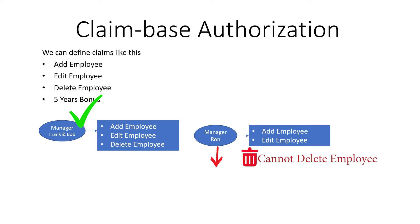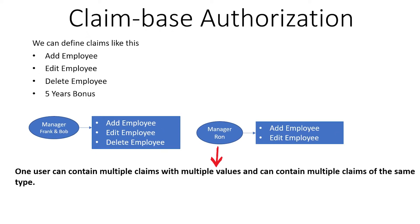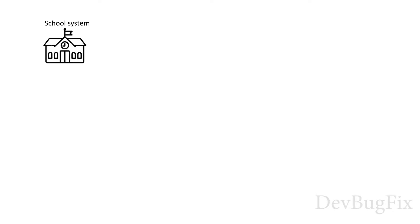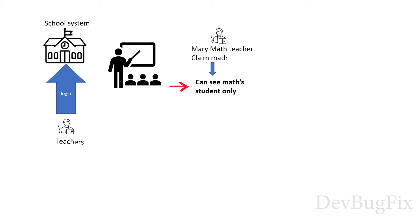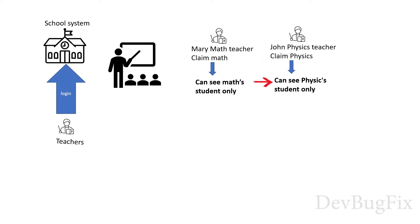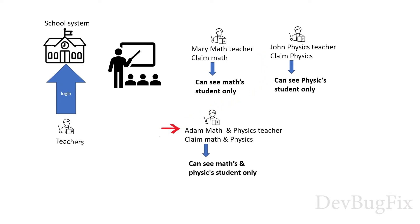This type of permission customization is not possible in role based authorization. One user can contain multiple claims with multiple values and can contain multiple claims of the same type. Let's take one more example where we will use both role and claim. You have a school system and teachers can log in and see their students. Those teachers are under the teacher role, but we don't want all teachers to see all students. So we need to differentiate people at the same level using their claims. Mary, a math teacher with claim math, can only see math students. John, a physics teacher with claim physics, can only see physics students. Adam, a physics and chemistry teacher with claims physics and chemistry, can see both physics and chemistry students. While all three teachers are under the teacher role, they can only see students with their corresponding claims.